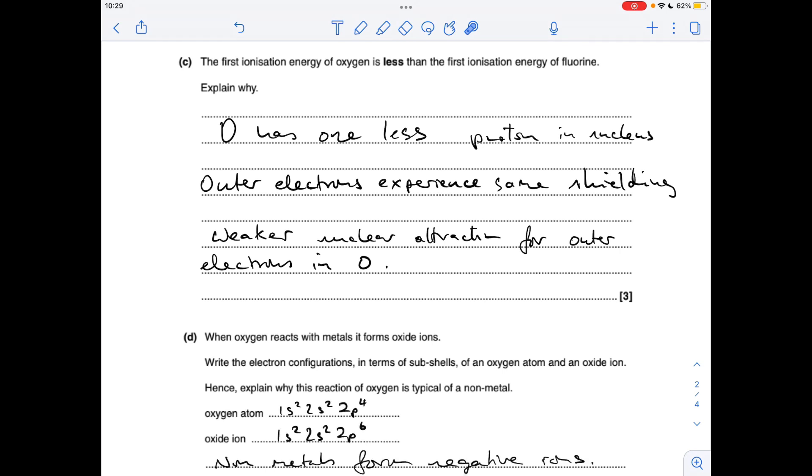Part D, so the electron configuration of the oxygen atom is that, the oxide ion remember gains two electrons to get that full outer shell so we've got that. And why is oxygen typical of a non-metal? Well it's because it forms negative ions when it gains those two electrons.